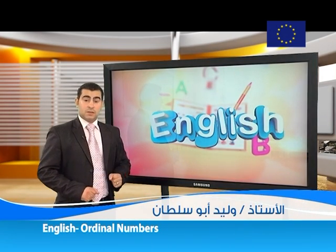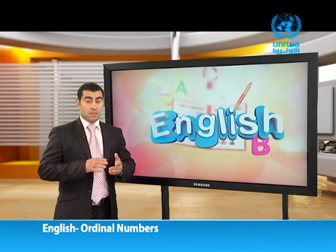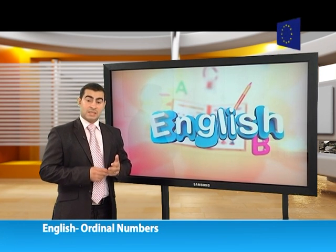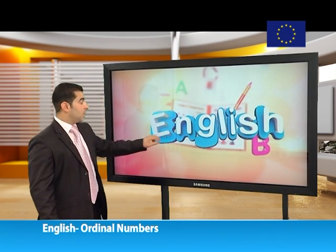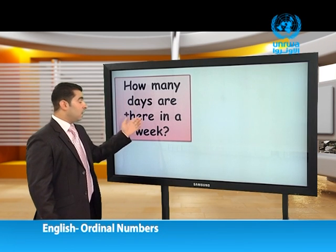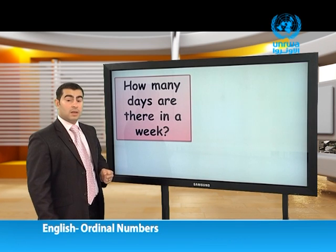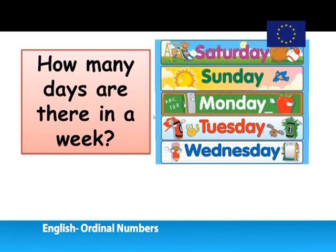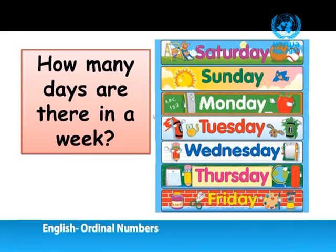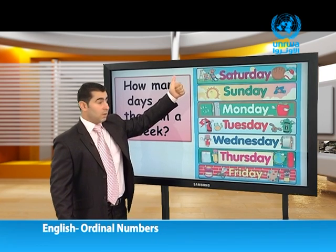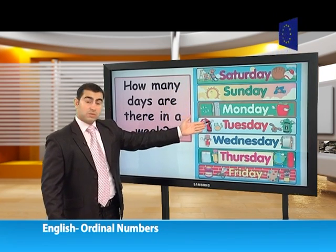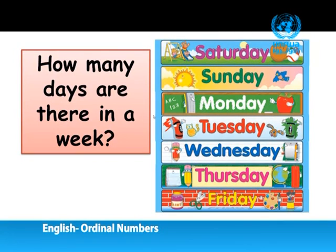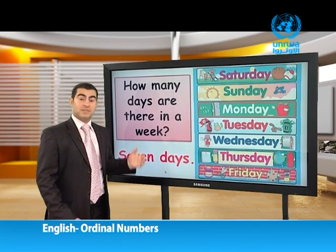Welcome back, dear students. In this part we are going to learn the days of the week and months of the year, and then we will relate them to the ordinal numbers. How many days are there in a week? Saturday — one, Sunday — two, Monday — three, Tuesday — four, Wednesday — five, Thursday — six, and Friday — seven. So we have seven days in a week.